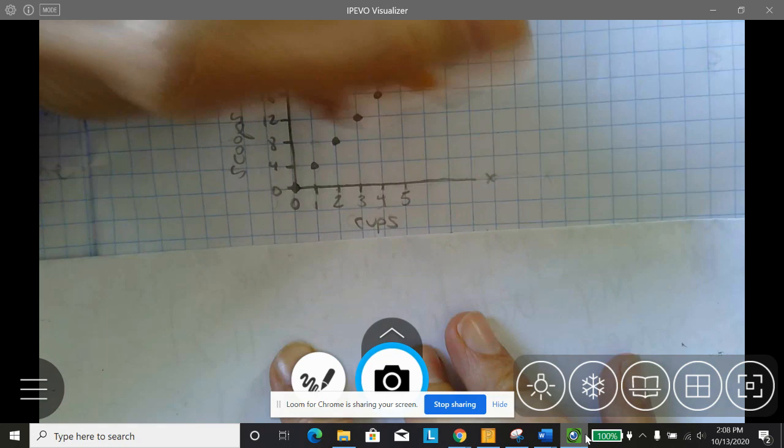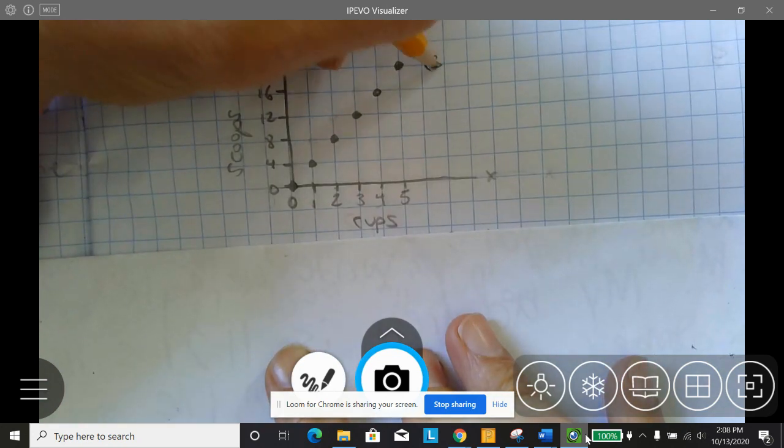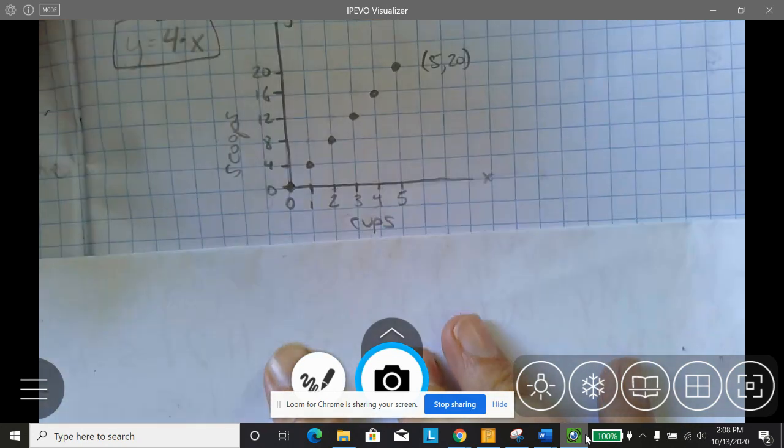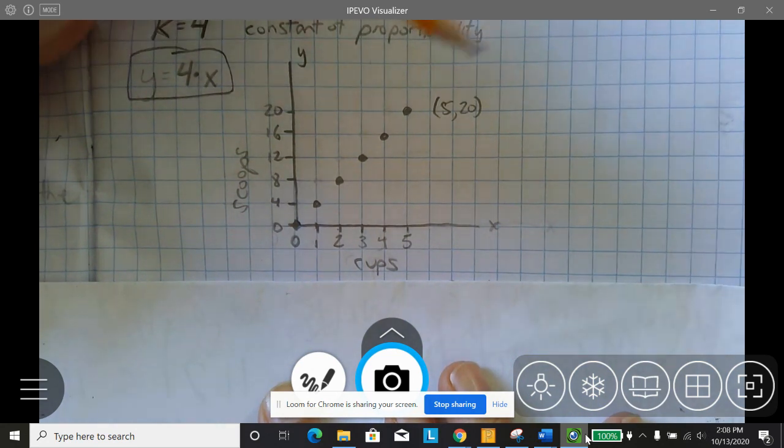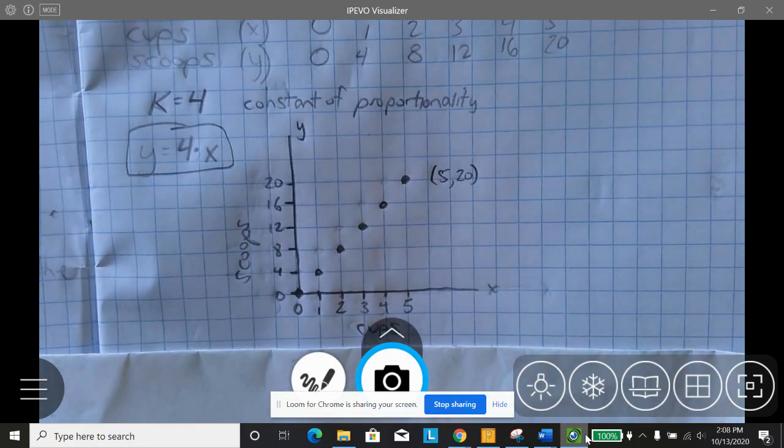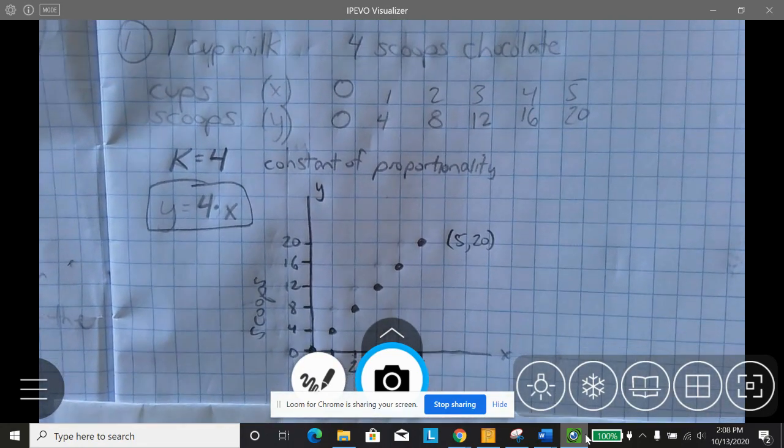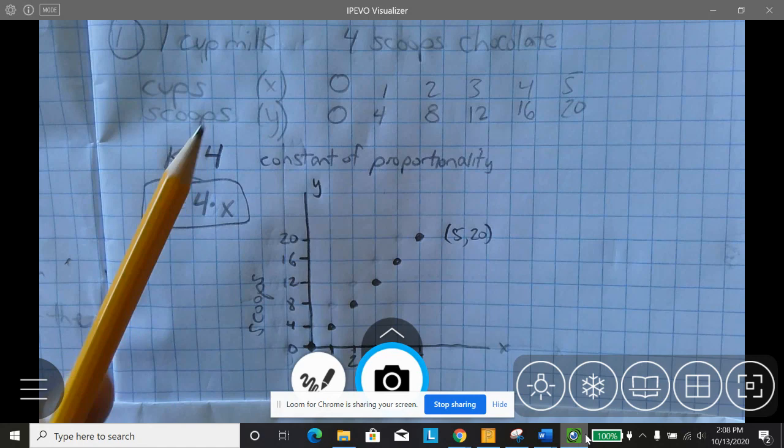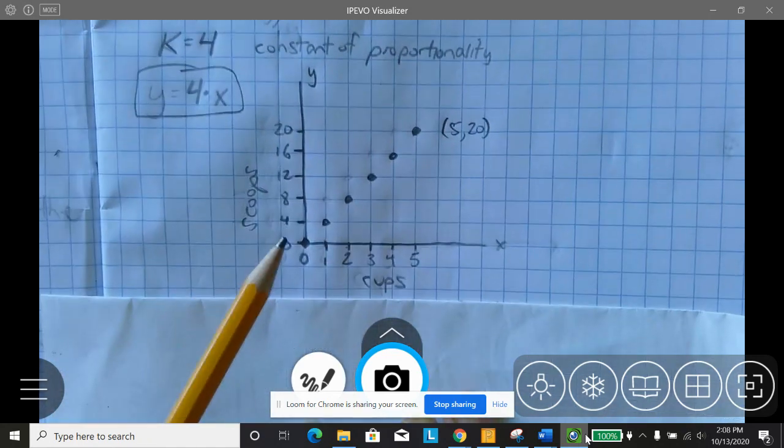And you can see that goes a nice straight line right through the origin. This last point was five comma 20. So that means five cups require 20 scoops. So I've now represented this whole situation as a table, as an equation, and as a graph.